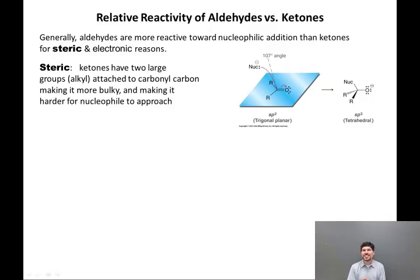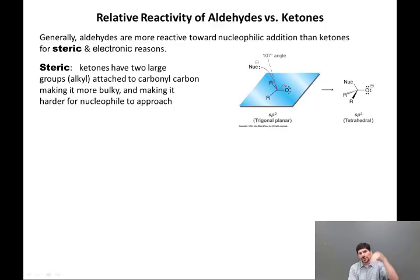As you can see in the diagram here, the nucleophile approaches the carbonyl carbon. It does not actually approach in between the two R groups, because if it did, it would be even more sterically congested. It approaches from almost perpendicular to the plane of the carbonyl group. But even doing so, if those R groups are large, it's going to cause interference.